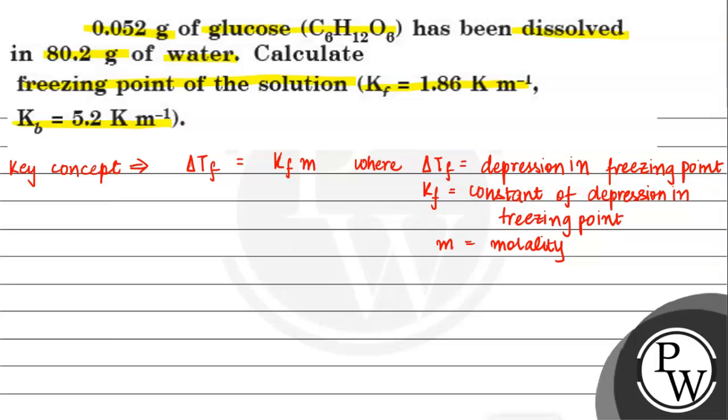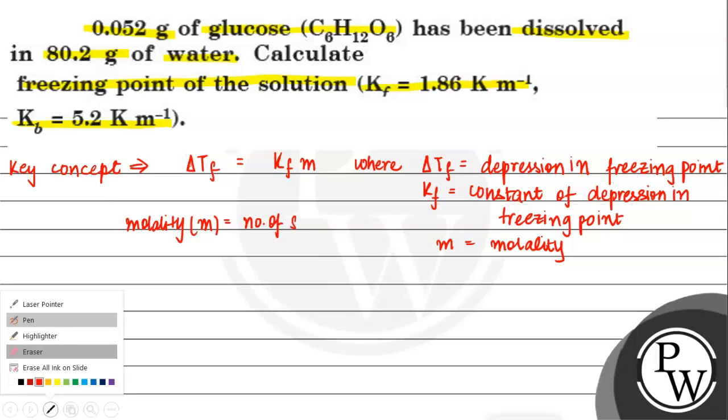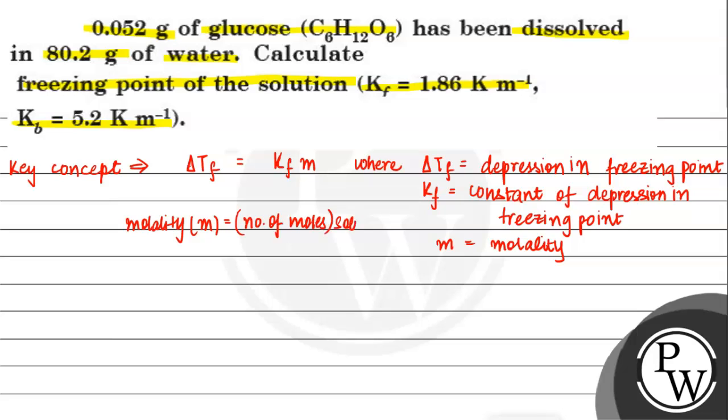We have seen a lot of molality formulas. Molality, which is represented by small m, is equal to number of moles of solute divided by mass of solvent in kgs. So this is our molality formula.